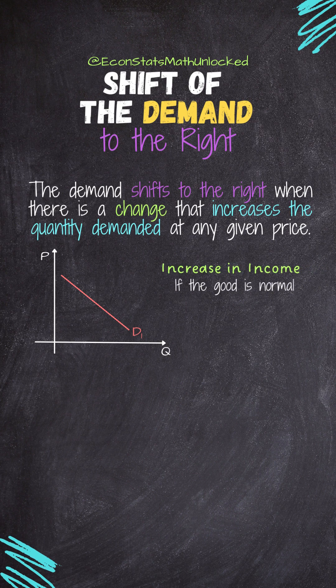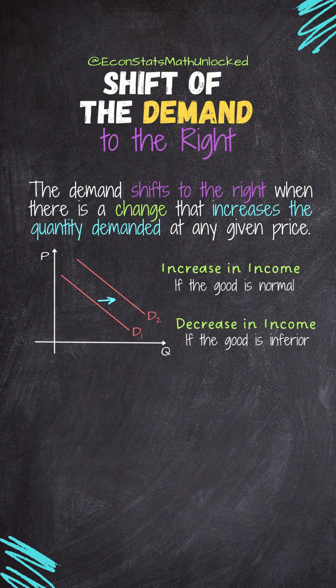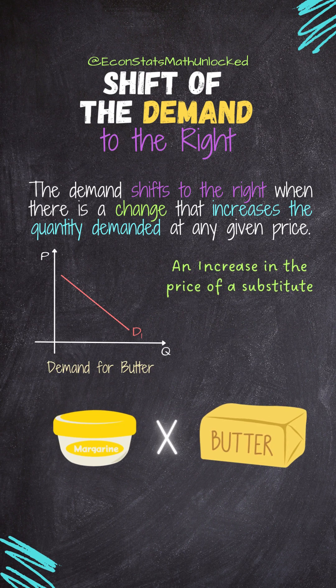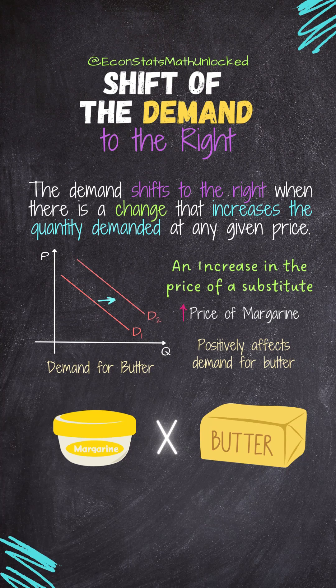For example, an increase in income shifts demand to the right if the good is normal. A decrease in income shifts demand to the right if the good is inferior. An increase in the price of a substitute good positively impacts demand, which shifts the demand to the right.